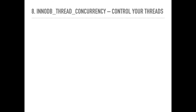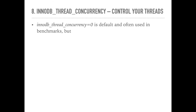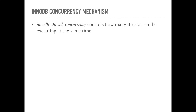InnoDB thread concurrency: you may hear that you should just set innodb_thread_concurrency equals 0 and forget it. Well, that's only true if you have a light or moderate workload. However, if you're approaching the saturation point of your CPU or I/O subsystem, and especially if you have occasional spikes when the system needs to operate properly when overloaded, I would highly recommend tackling innodb_thread_concurrency. InnoDB has a way to control how many threads are executing in parallel — a concurrency control mechanism — and if set to 0, concurrency control is off, so InnoDB processes all requests immediately as they come in.